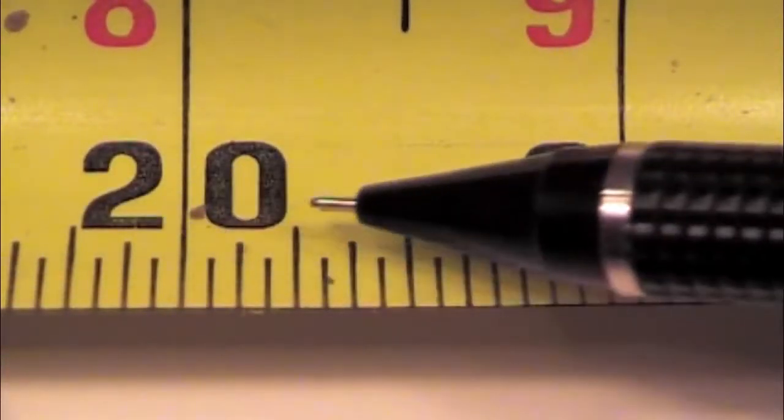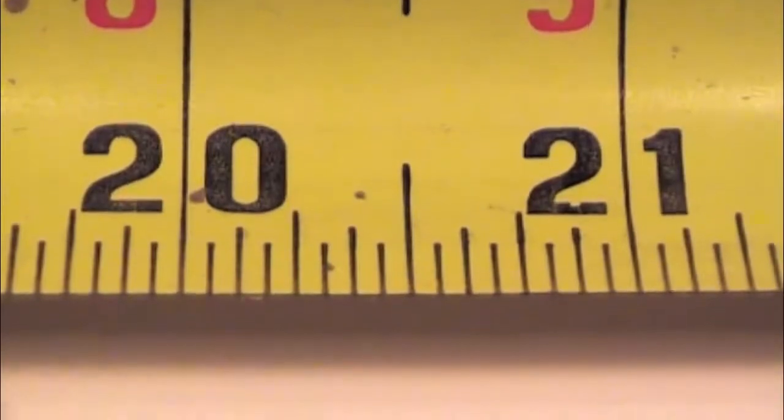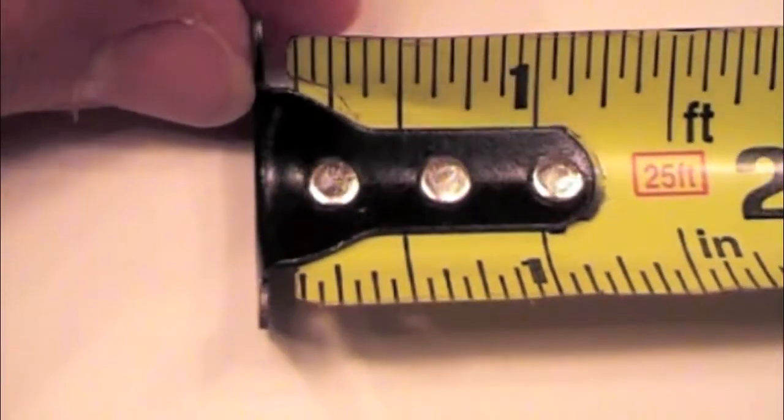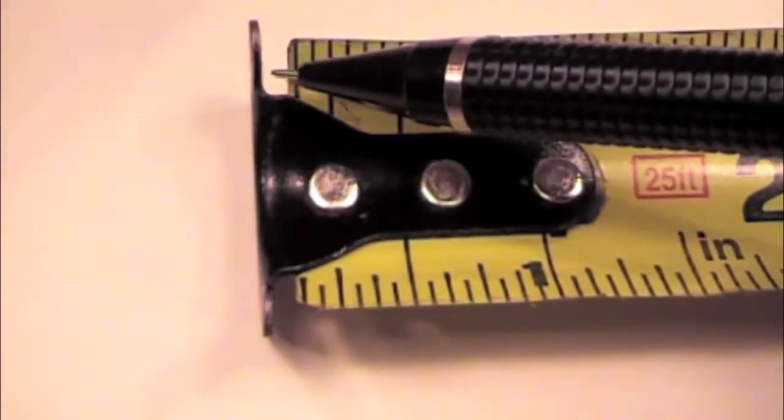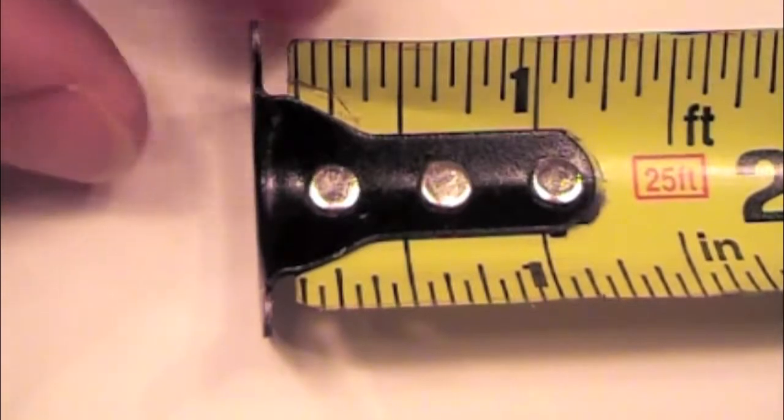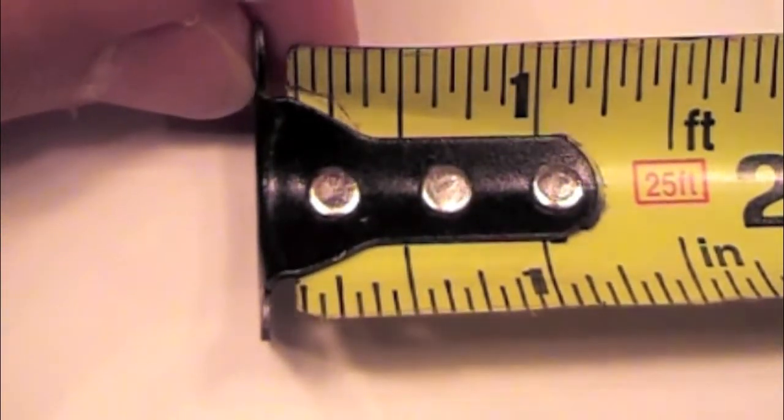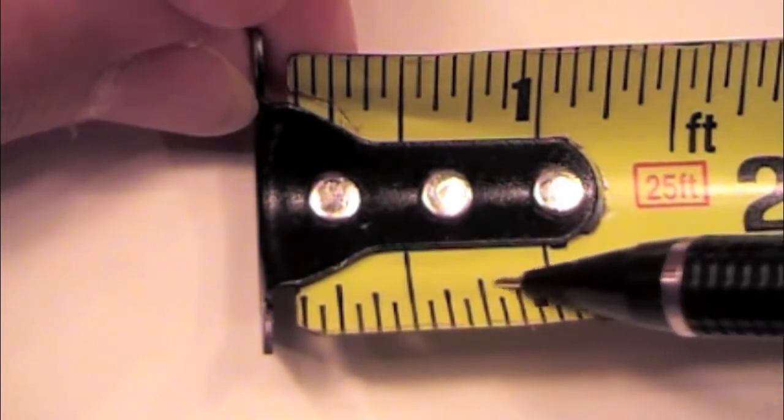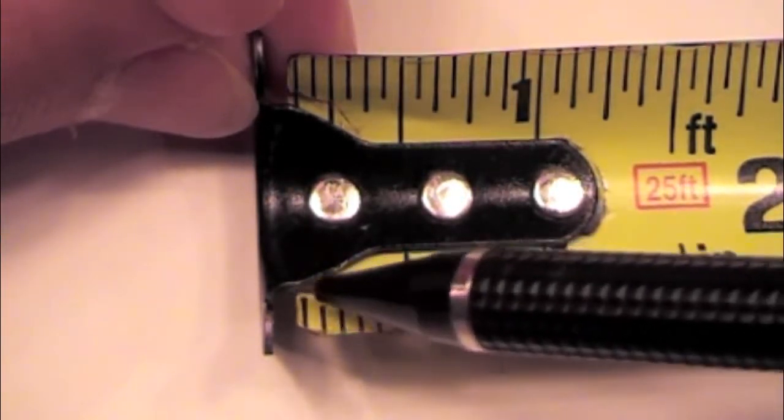You might be asking why we don't do this at the zero. At the very end of the tape measure, we can run into some inaccuracies. As you can see, this one has a little bit of wear and tear. And when you're using a tape measure at the very end, we have our one inch, we go backwards to half an inch, and we have zero.